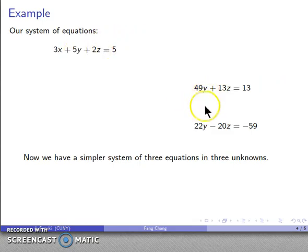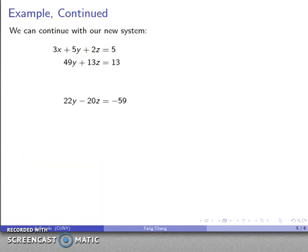So now I have 1, 2, 3 simpler equations in the same unknowns, and because everything I did is allowable under the rules of algebra, the solutions to my original system and the solutions to the new system are the same.